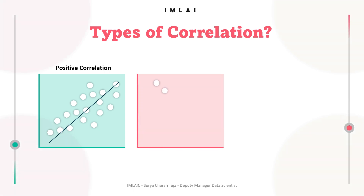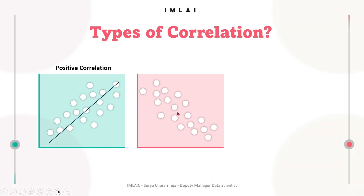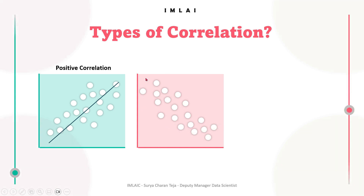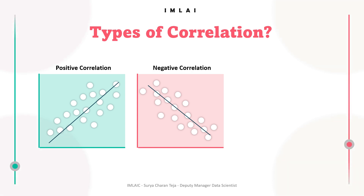The second type is negative correlation. In this case the relationship line has a negative slope and the variables change in opposite directions — one variable decreases while the other increases. As x is increasing, y is decreasing. Y is inversely proportional to x. This kind of inversely proportional relationship between two variables is called a negative correlation.